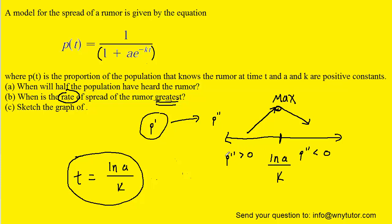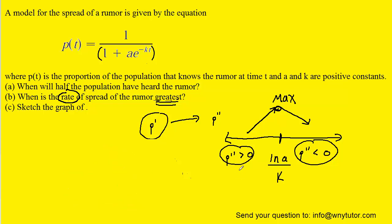If you have any questions about where those two values are coming from, please let me know in the comments. Also, when the second derivative is positive, that means the original function is concave up, and when the second derivative is negative, the original function is concave down. We're going to keep those two aspects in mind when we go to sketch the graph of this function.